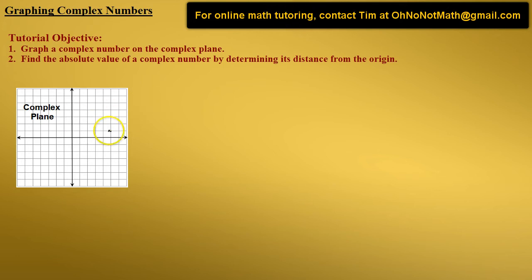So what is the complex plane? Well, it looks just like the Cartesian plane. It has a horizontal axis and a vertical axis, but instead of labeling our axes x and y, we label them r for the real part of a complex number and i for the imaginary part.